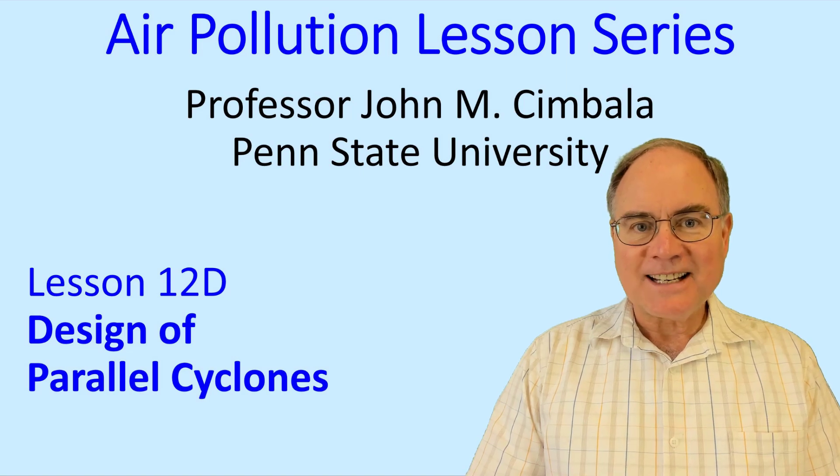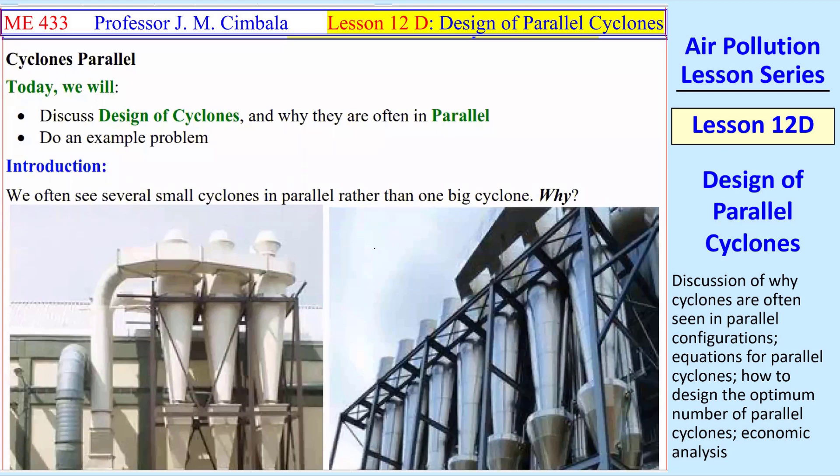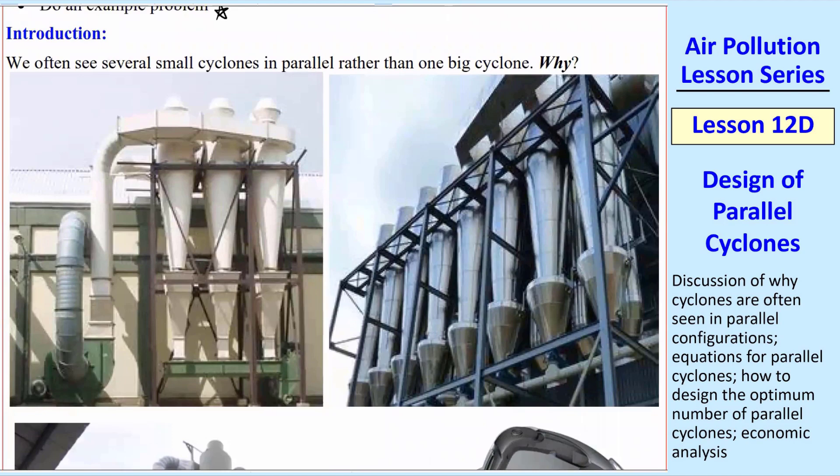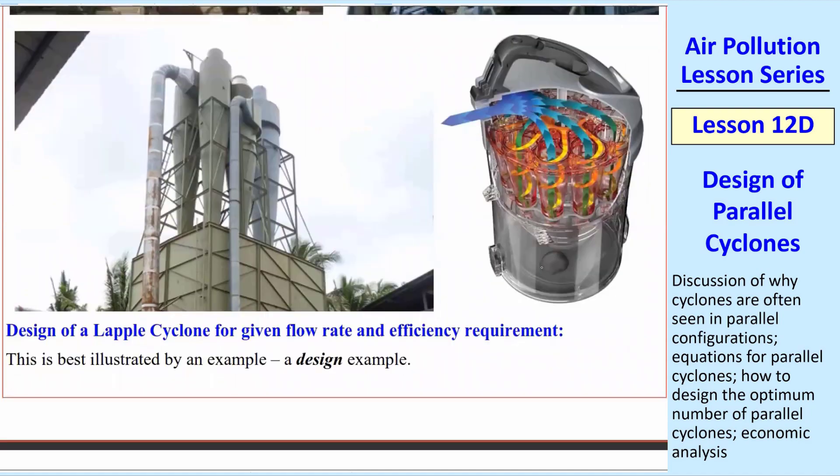Welcome to Lesson 12D, Design of Parallel Cyclones. We're going to talk about cyclones in parallel and why we might put them in parallel. Pretty much the entire lecture is going to be one big example problem. By introduction, some pictures along the road - if you look around, you'll see small cyclones in parallel a lot of times rather than one big one. In the home, this is a canister from a vacuum cleaner that has, I think, 12 small cyclones instead of one big one. Why do we do this?